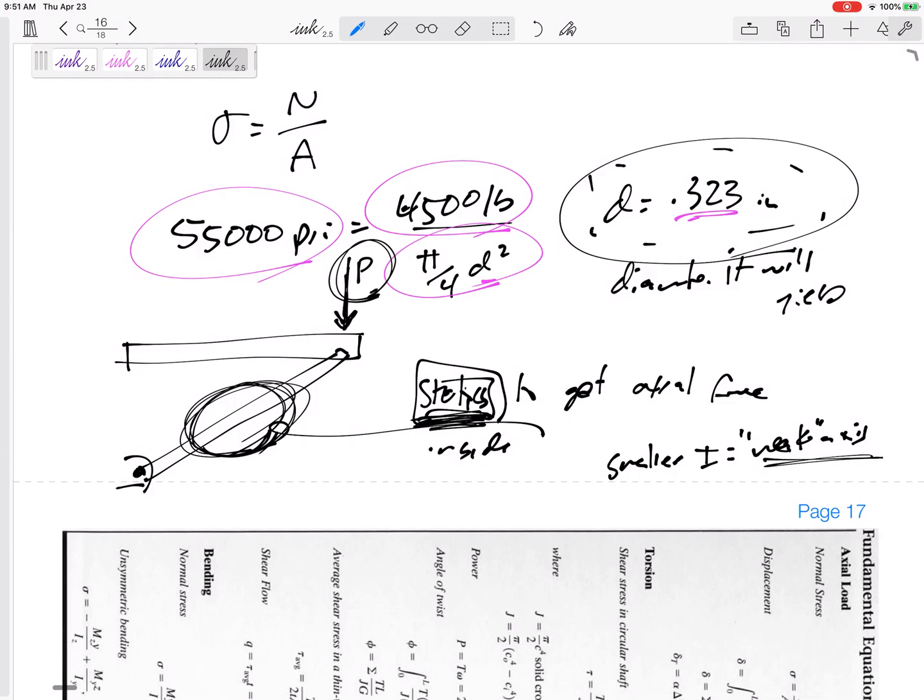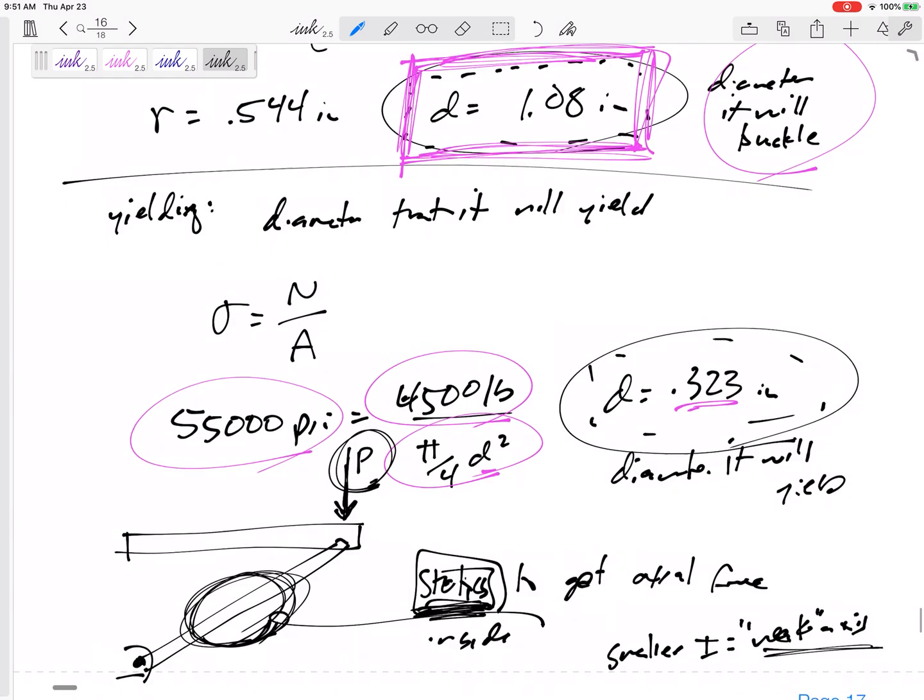But go back and look at those problems where the weak axis might be fixed-fixed, and the strong axis might be pinned-pinned. Sometimes they are supported differently on the strong axis versus the weak axis.